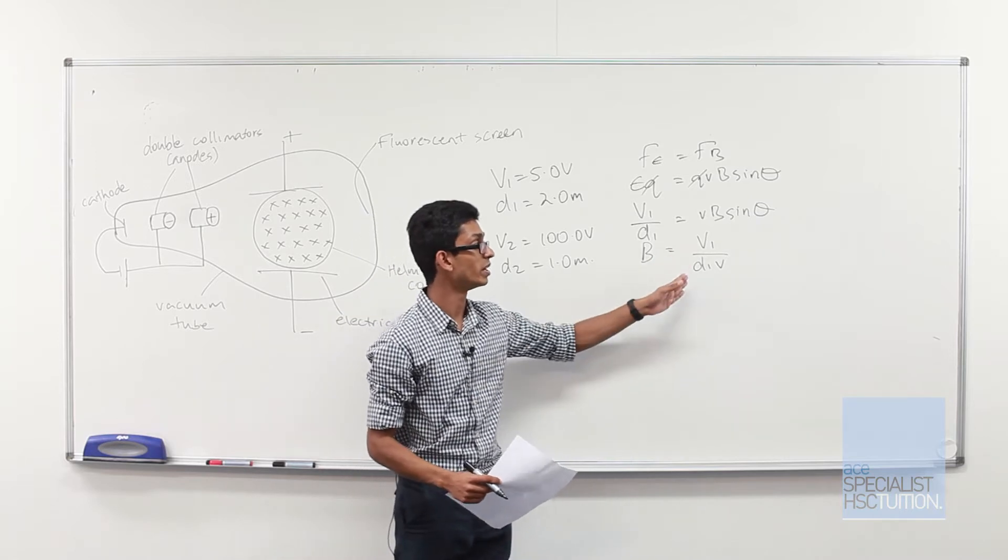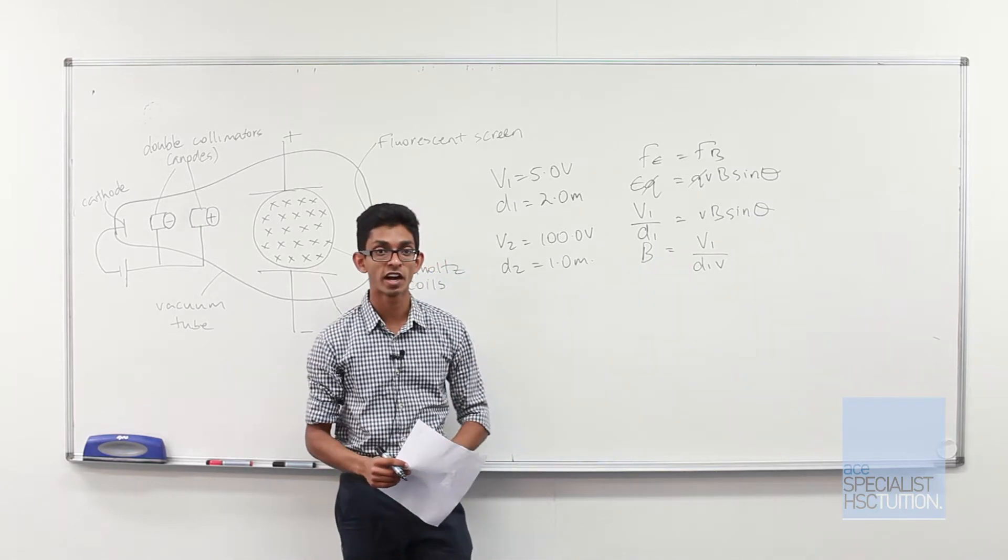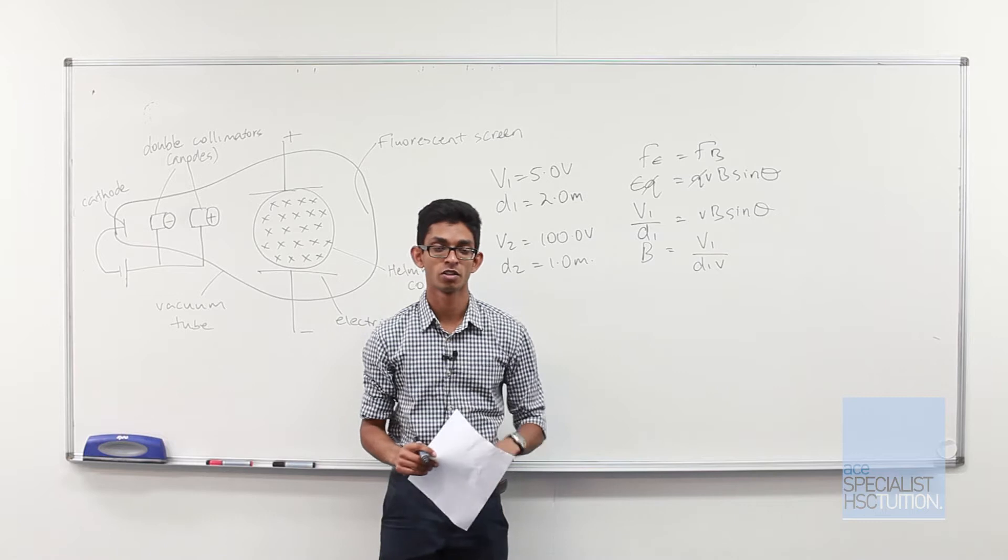We know V1, we know D1, now we just need to find the speed of the electron through the electric field.